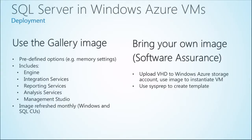How do you deploy these virtual machines with SQL Server? There are two ways. First, you can use the gallery image, which comes with predefined options for memory settings. This image includes the engine, integration services, reporting services, analysis services, and management studio. You can use all of these services and utilities. We refresh the image every month so every CU and every critical hotfix is already included at the point of provisioning.